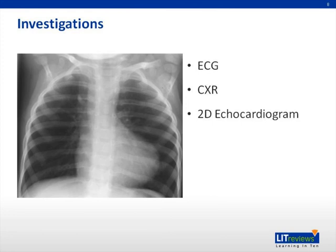In terms of diagnosis, TOF can be detected in utero. If it presents in young children or infants, echocardiograms can be used for diagnostic purposes and to evaluate the degree of pulmonic stenosis. Cardiac catheterization can also be done for diagnosis, but is rarely used for this purpose these days.